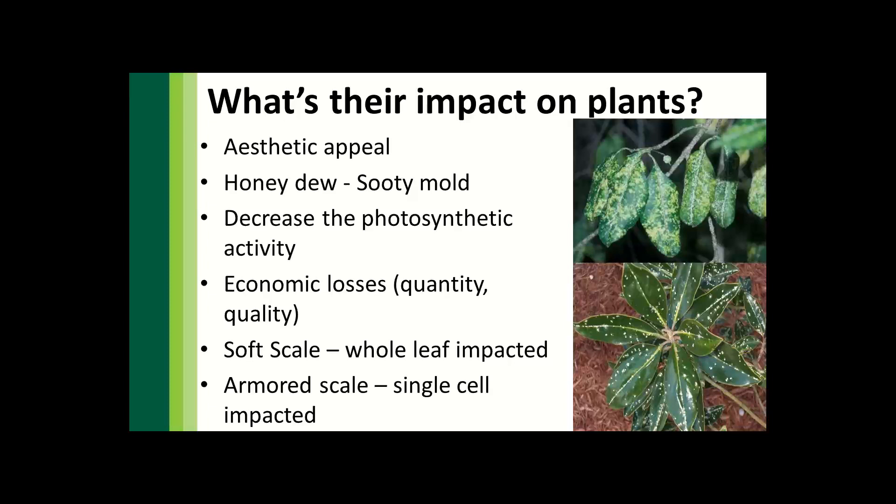As a general diagnostic rule of thumb: soft scales will typically give you a whole-leaf impact — you'll see decline on the entire leaf or branch. Armored scales typically give you a single-cell impact. This is a difference in how and where they're feeding in the plant. Soft scales are feeding on the phloem and armored scales are feeding on individual cells.